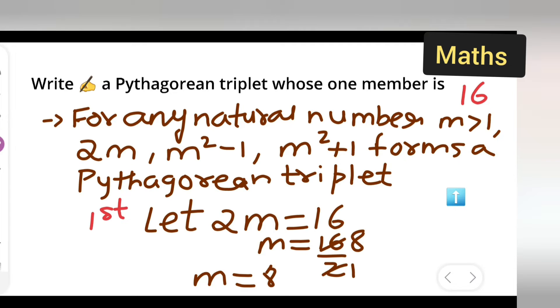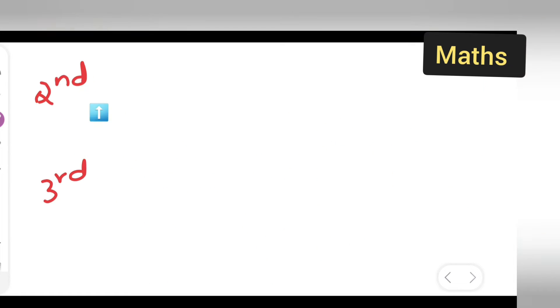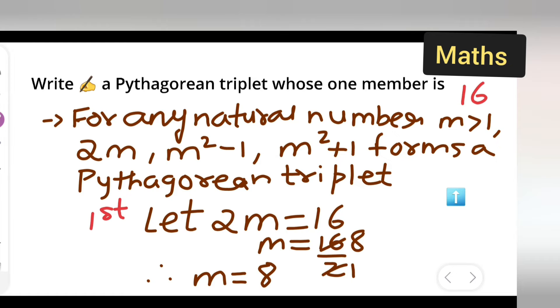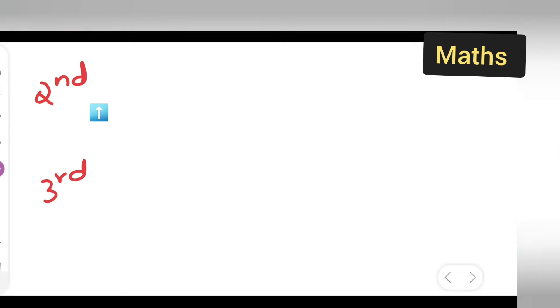So we got the value of m to be 8. Next, write down the second part. What is the second part from here? m² minus 1. So write down m² minus 1.